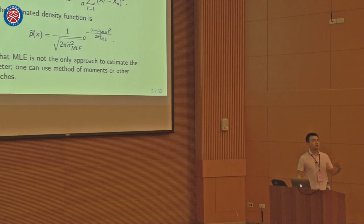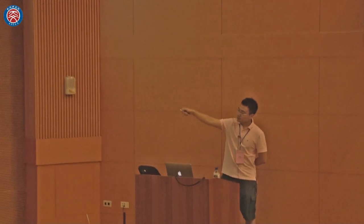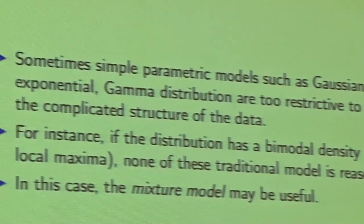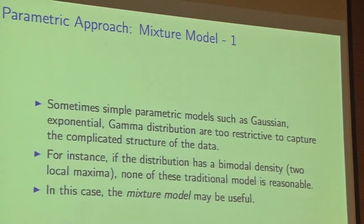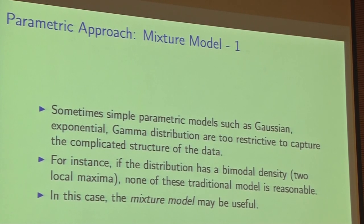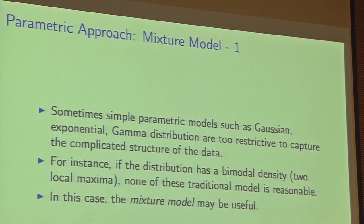However, parametric model assumptions — like Gaussian, exponential, or gamma distributions — are sometimes very strong and cannot capture complicated structures. For instance, if the distribution has bimodal data with two local maxima, none of these distributions are reasonable: Gaussian only has one peak, exponential is decaying, and gamma also has one peak. So if it's bimodal, none of these methods work.